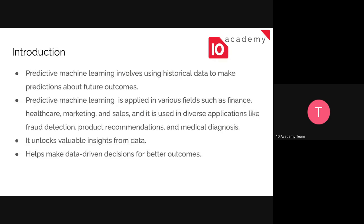So just to go over it again, predictive learning involves having historical data that's already been from the past. The machine learning algorithm or the models will help us find the trend from that historical data, and depending on that trend, it will look forward and try to predict the future.